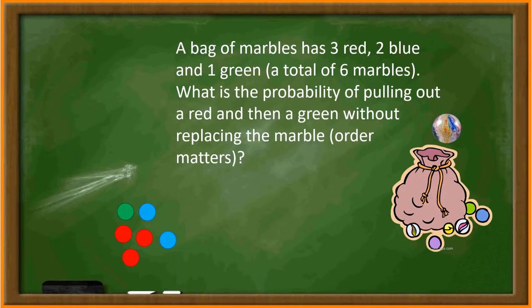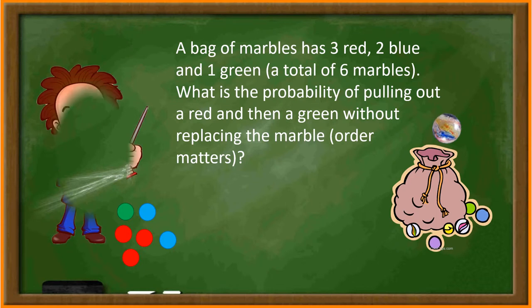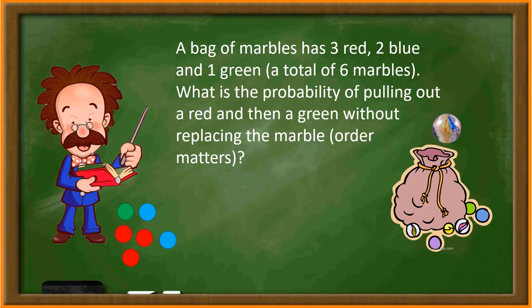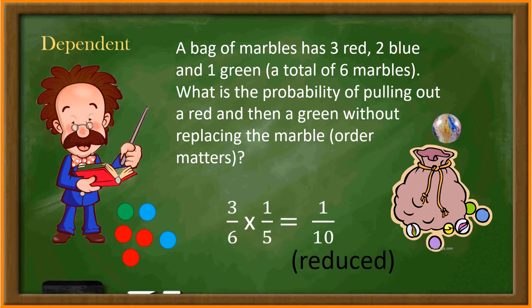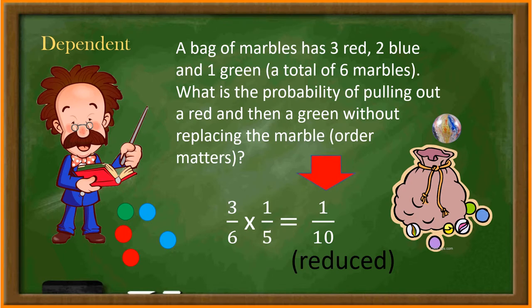A bag of marbles has three red, two blue, and one green — a total of six marbles. What is the probability of pulling out a red and then a green without replacing the marble? Since a marble is removed and cannot be used again, the event is dependent. The probability of pulling out a red marble is three out of six. The probability of pulling out a green marble is one out of five, since a marble was removed in the first pull, leaving only five marbles total. So the answer will be three sixths times one fifth, which is one tenth, reduced.